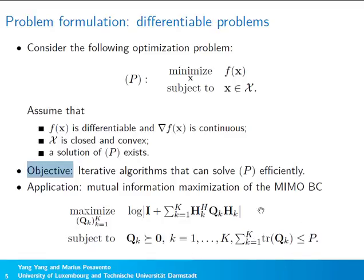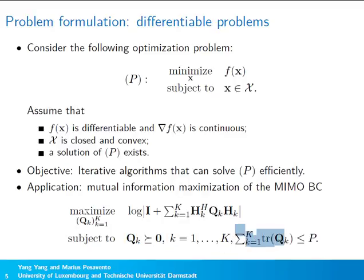Here is an example of this optimization problem. The objective function contains mutual information that we want to maximize, where H_k is the channel from the base station to the k-th user, and Q_k is the transmit covariance matrix to be optimized. We want to design the transmit covariance matrix to maximize transmission rate, subject to the constraints that the matrix is positive semidefinite and the total transmit power does not exceed a constant P.